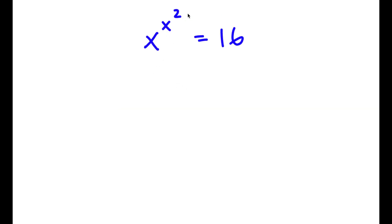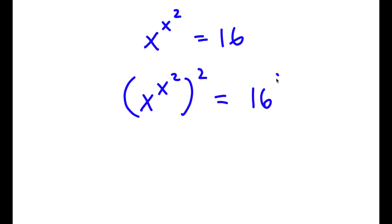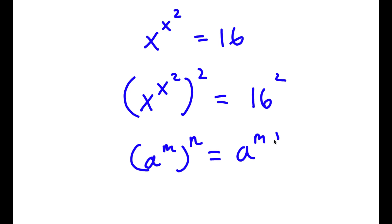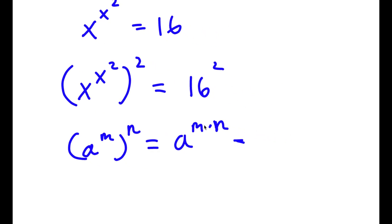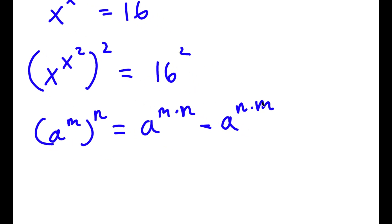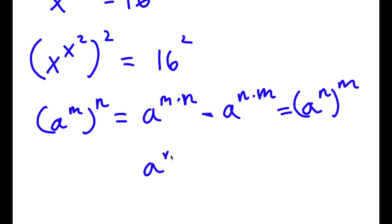Alright, so I have x to the power of x to the power of 2 is equal to 16. The first thing I'm going to do is take the power of 2 on both sides, giving x to the power of x to the power of 2, all to the power of 2, is equal to 16 to the power of 2. Using the rule that a to the power of m to the power of n equals a to the power of m times n, and that m times n is interchangeable, we can rewrite a to the power of n times m as a to the power of n to the power of m.